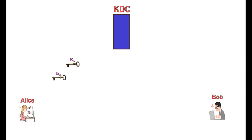There is a pair of shared keys between Alice and KDC, and also between Bob and KDC.